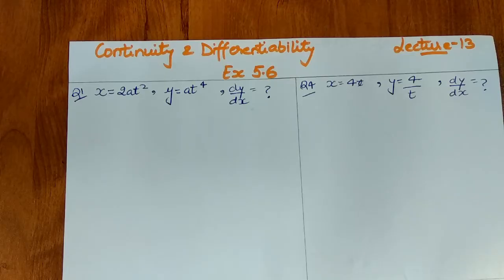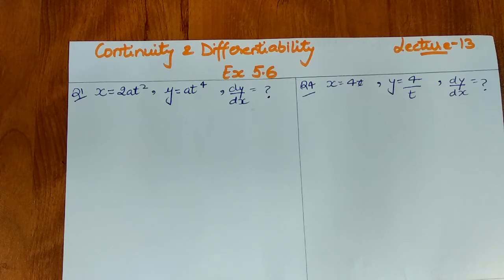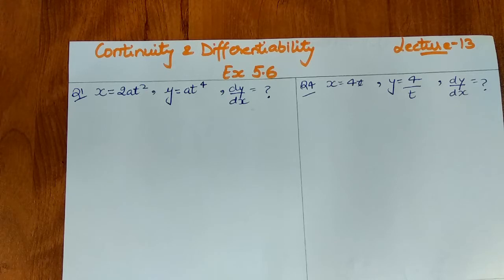Hello everyone, welcome back to my channel. In this video we will be solving Exercise 5.6 of NCERT. This exercise covers the complete concept of derivatives of the parametric form, when x and y are not directly connected in one equation but are connected through one parameter — a new variable. I hope you have a clear concept from the last video.